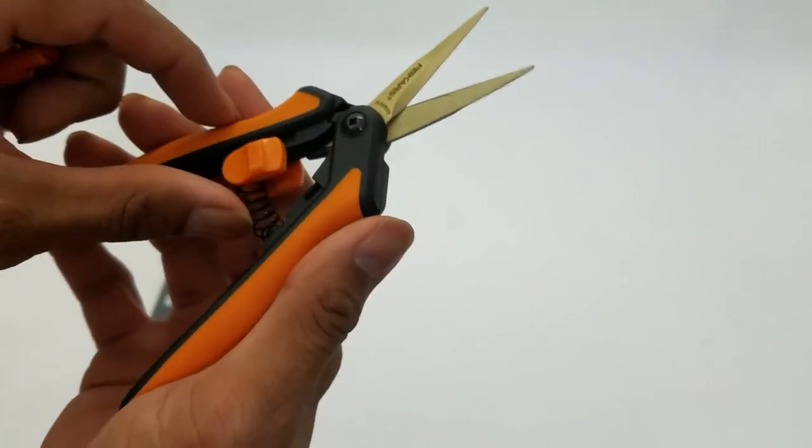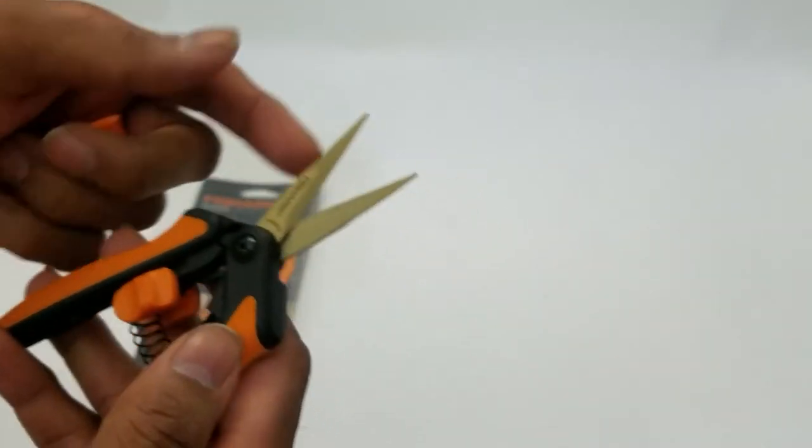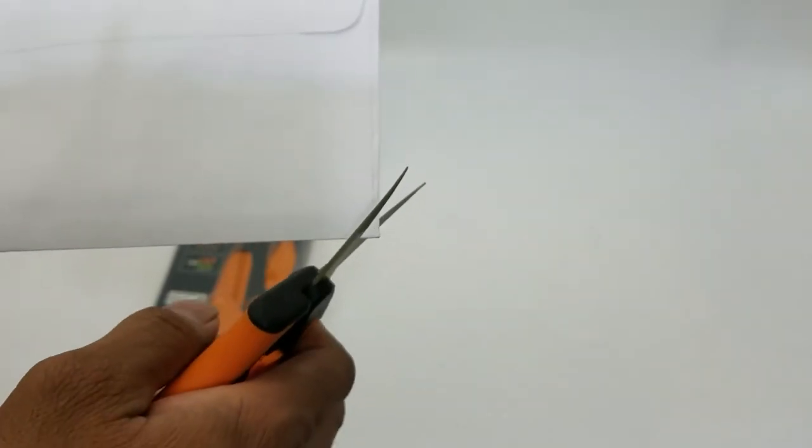Looks like it's carbon steel, it's not going to rust, it's coated. This tip is pretty pointy. An easy test is to see if it can cut paper.